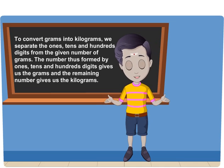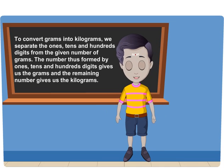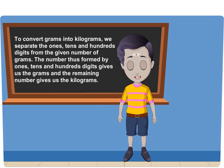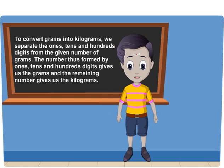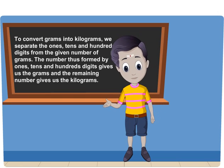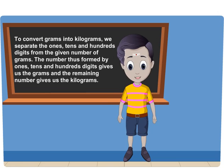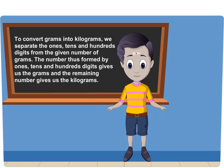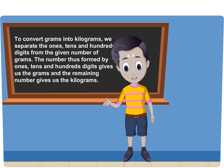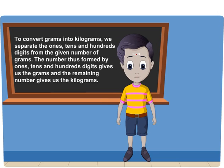To convert grams into kilograms, we separate the 1s, 10s and 100s digits from the given number of grams. The number thus formed by 1s, 10s and 100s digits gives us the grams and the remaining number gives us the kilograms.